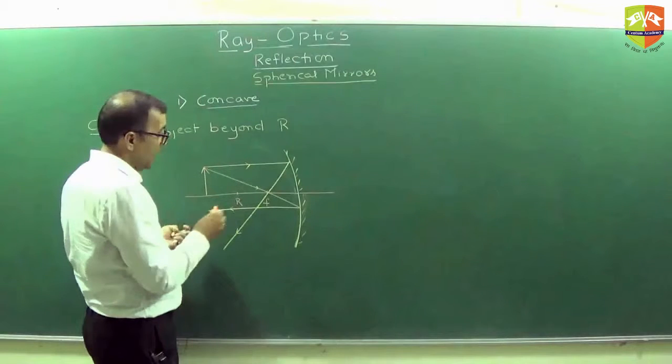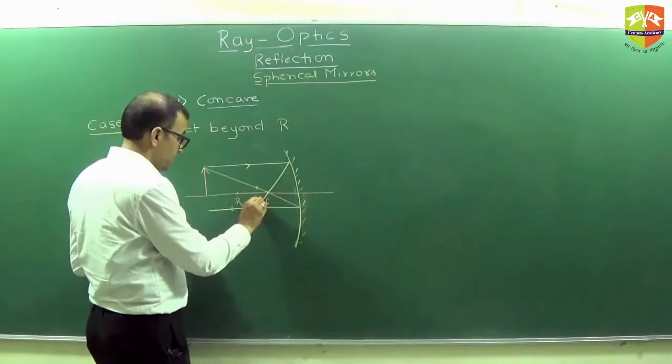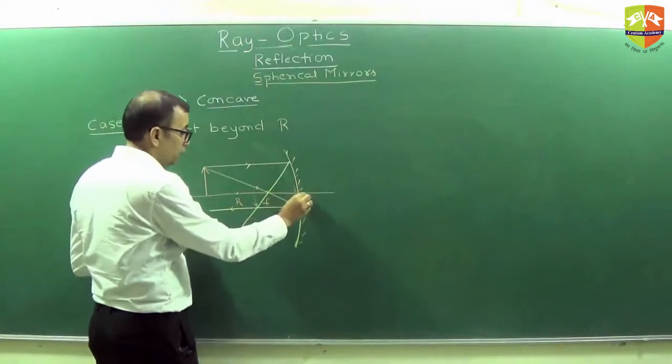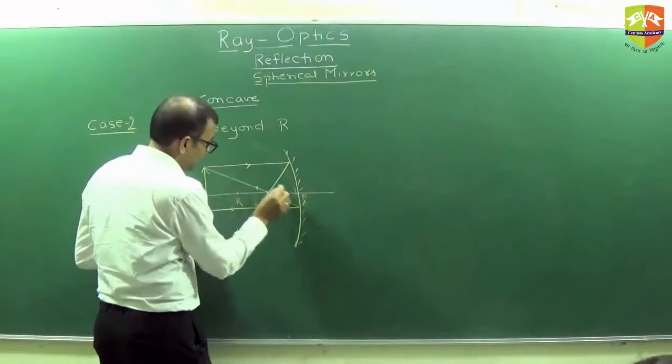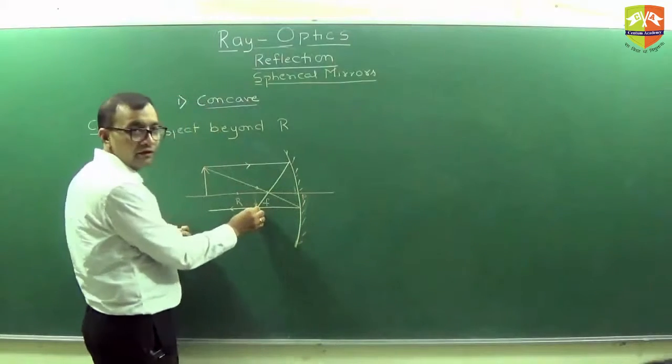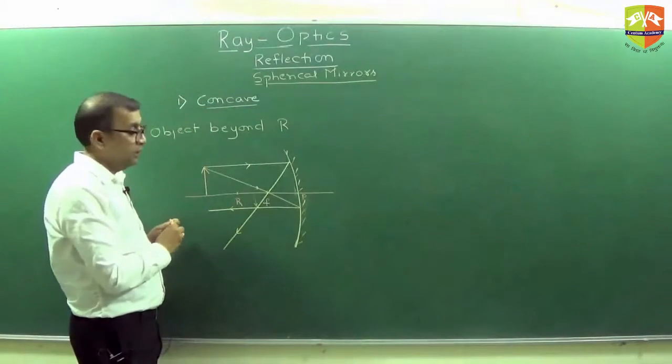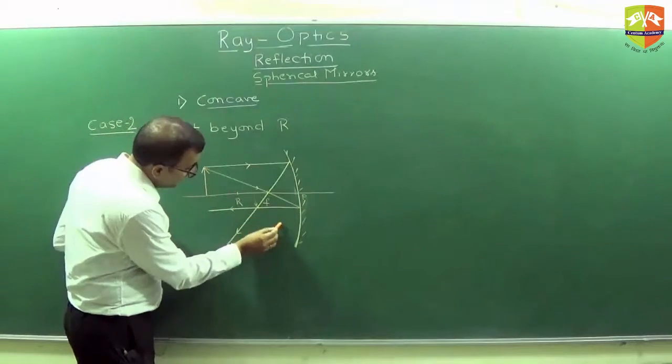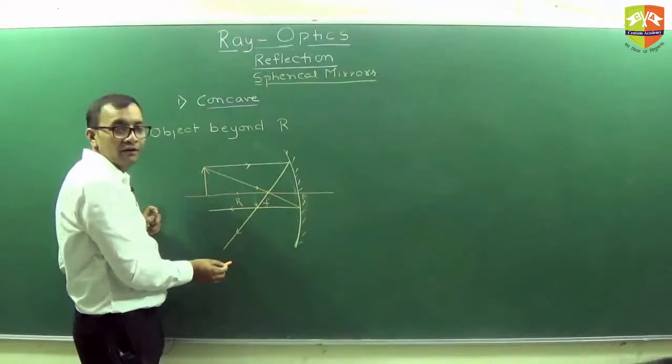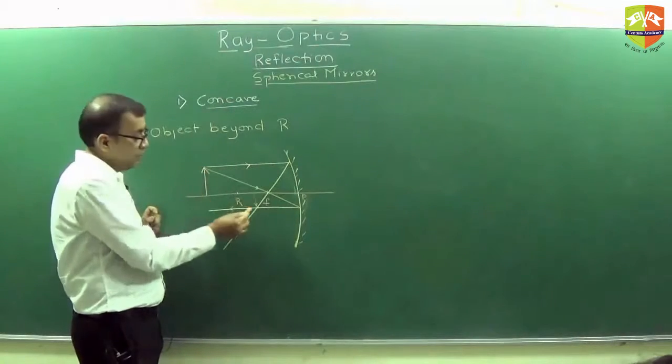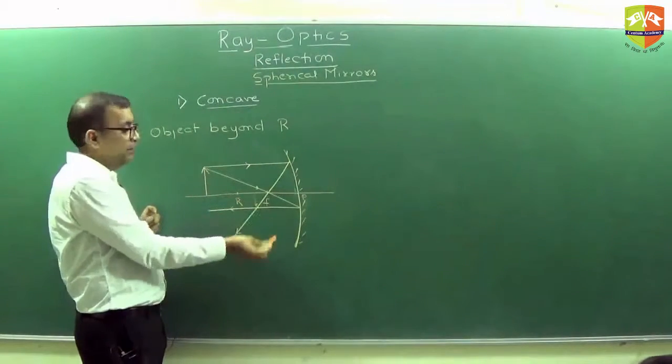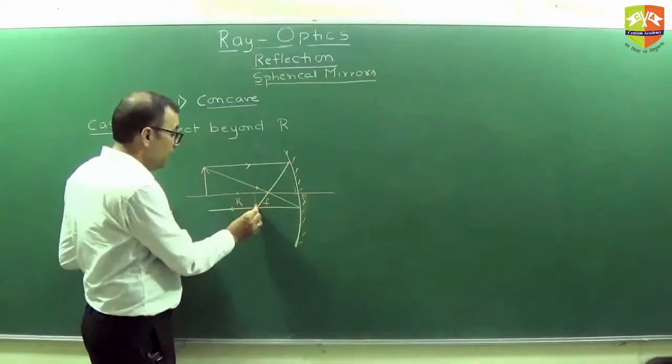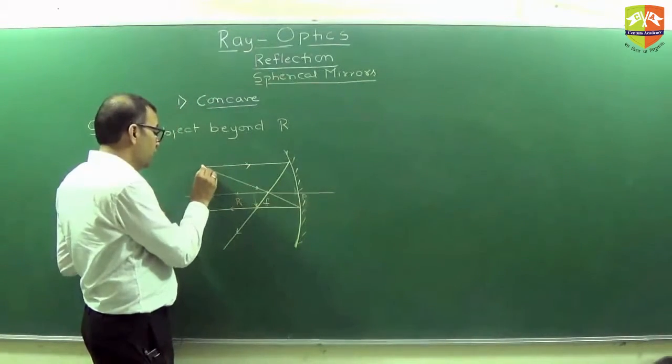Can you draw any other ray? Which one? Through the pole you can draw. Like this, and it will come and meet here. What else you can do? You can pass a ray through radius like this. What will happen to this ray? It will come back. So again image will be here only. But you just need only two rays. So this is the image of what? Image of this point.